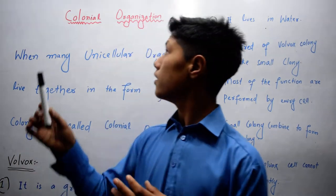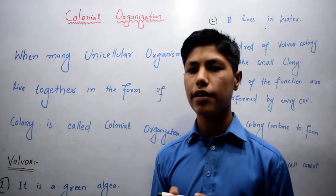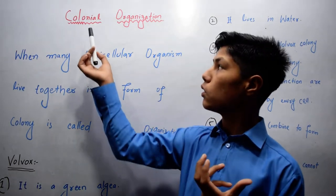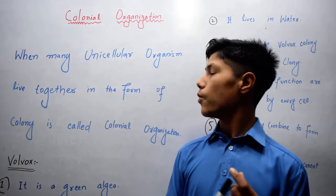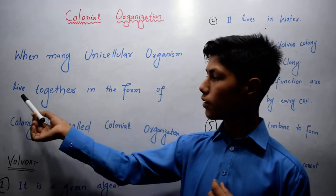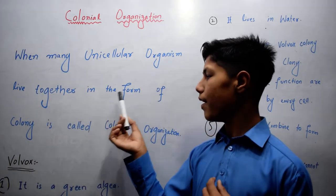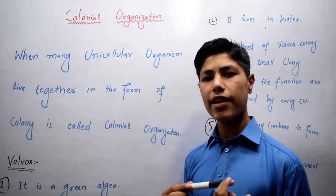Let's talk about Colonial Organization. What is Colonial Organization? When many unicellular organisms live together in the form of colony, it's called Colonial Organization.